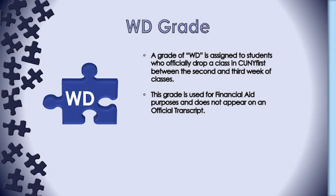The grade of WD is assigned automatically to a student who drops a class during the second and third week of classes in CUNY First. This deadline is posted on the academic calendar on the Office of the Registrar's website. The W and WD grades are considered official withdrawal grades and therefore initiated by the student in CUNY First. The WD grade is used for financial aid purposes to calculate aid, and lastly, the WD grade does not print on the student's official transcript.